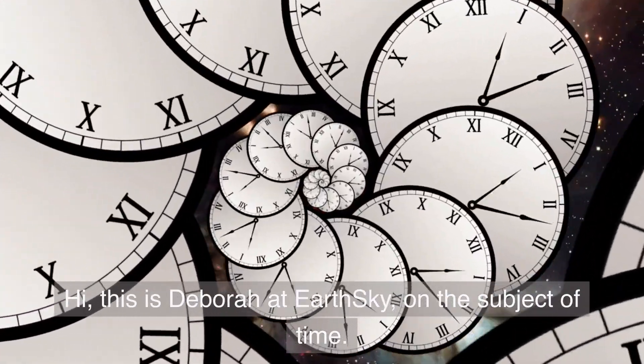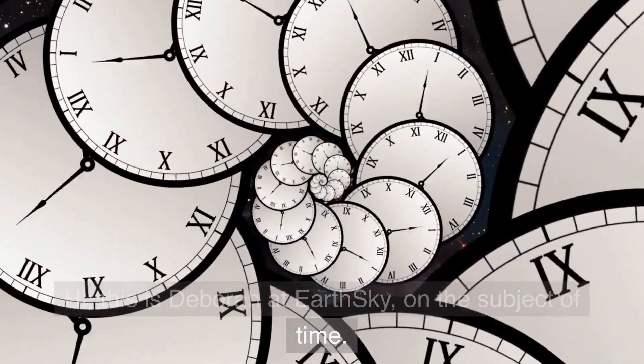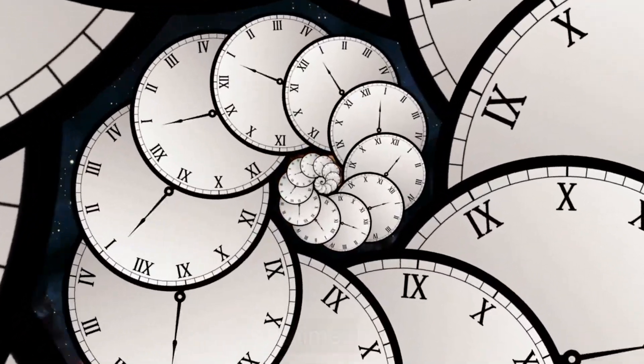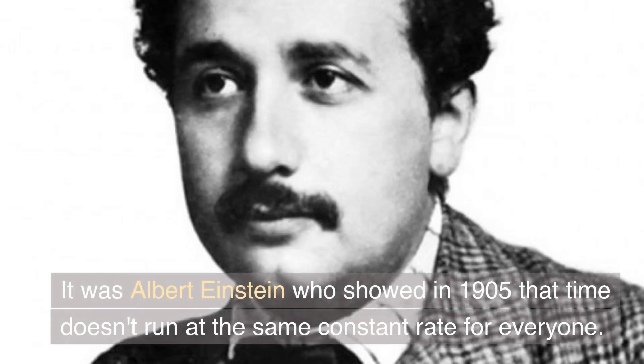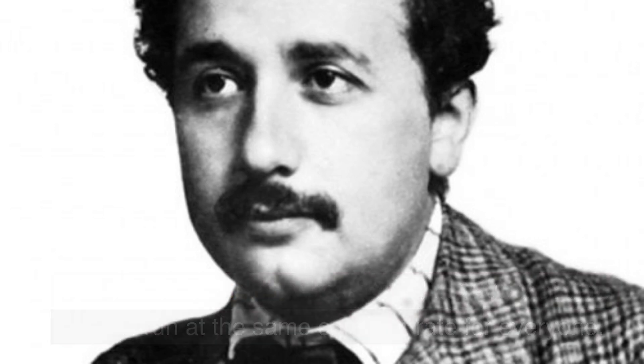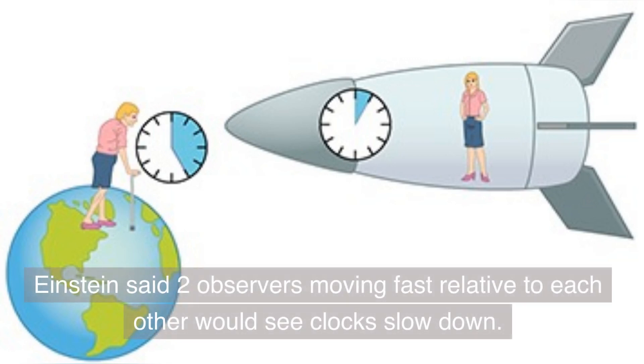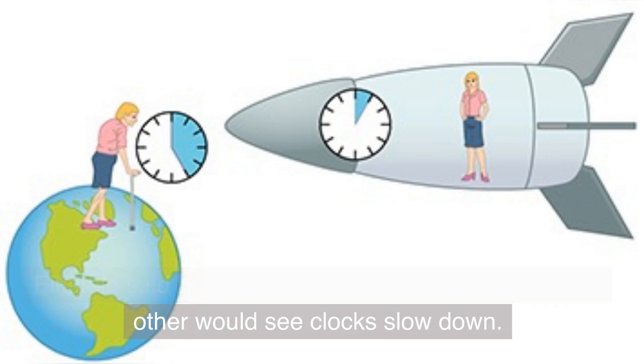Hi, this is Deborah at Earth Sky on the subject of time. It was Albert Einstein who showed in 1905 that time doesn't move at the same constant rate for everyone. Einstein said that two observers moving fast relative to each other would see clocks slow down.